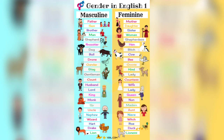More pairs: drone — bee, gander — goose, stag — hen, gentleman — lady, count — countess, husband — wife, lord — lady, king — queen, monk — nun, sir — madam, uncle — aunt, nephew — niece, wizard — witch, hart — roe, drake — duck, lion — lioness.